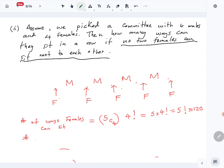Then the number of ways males can sit—they can sit in any order in their four positions—so 4 factorial, which is 24.